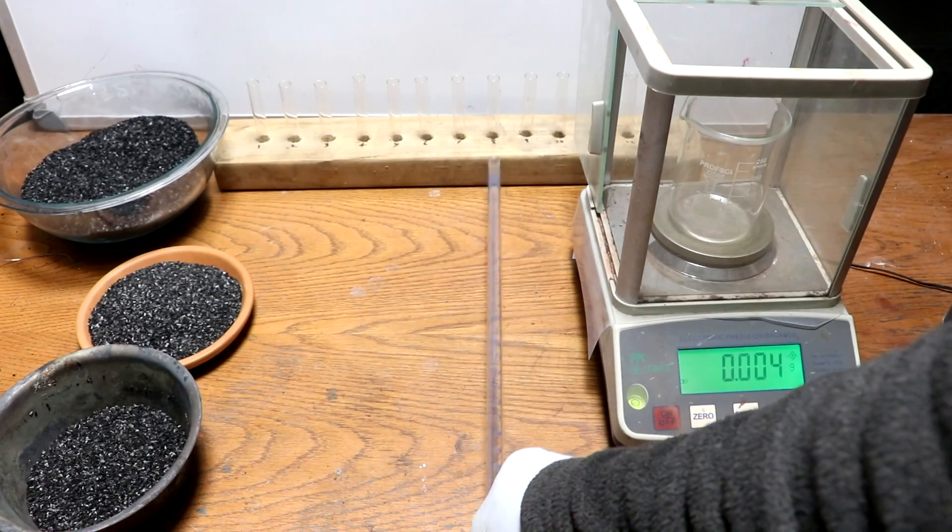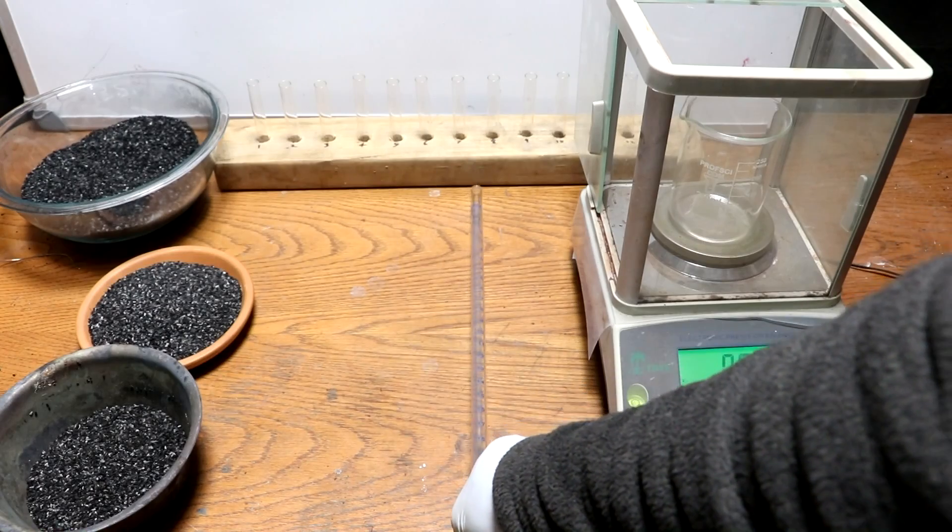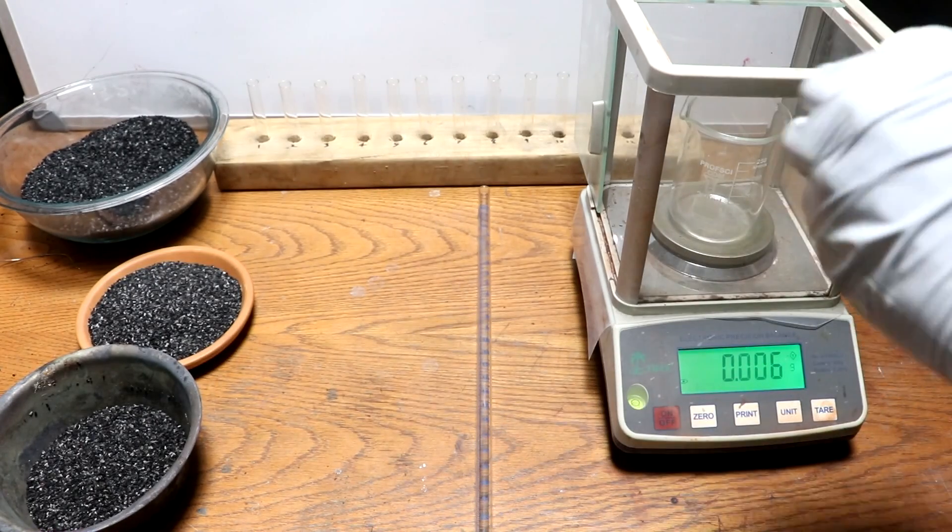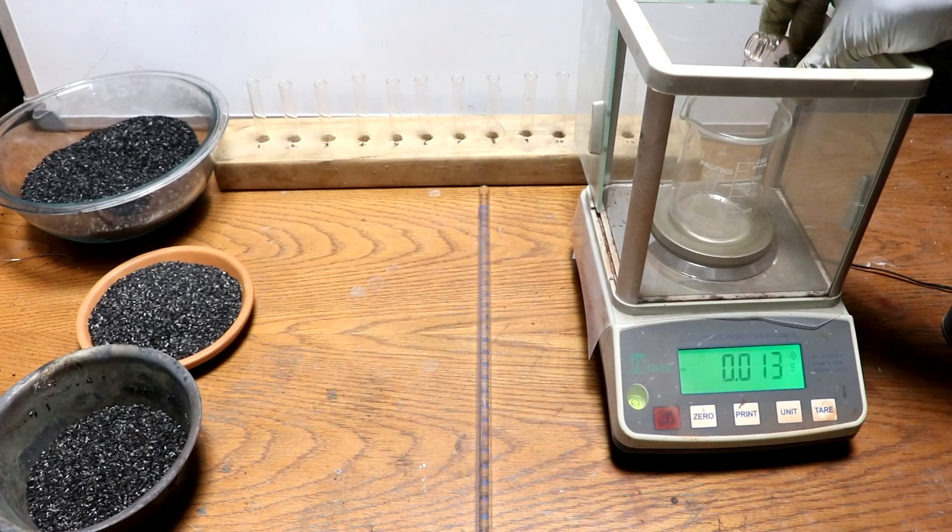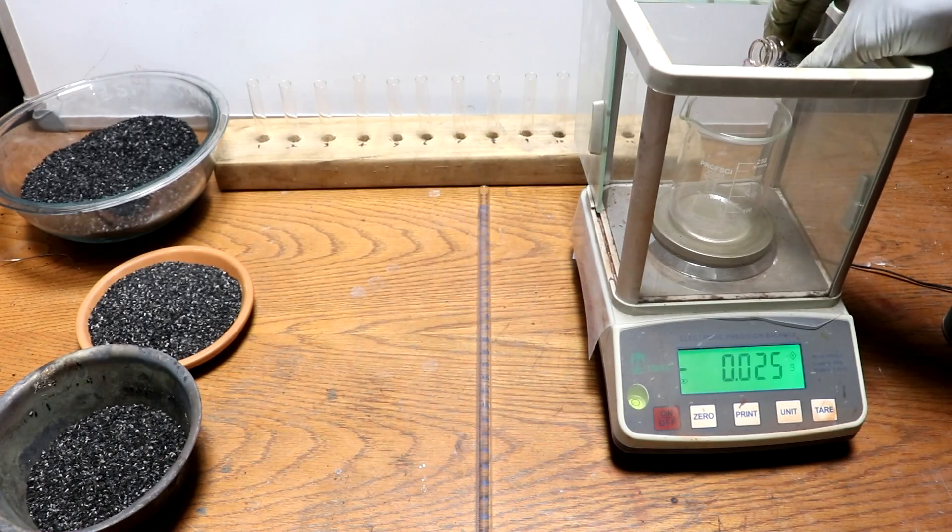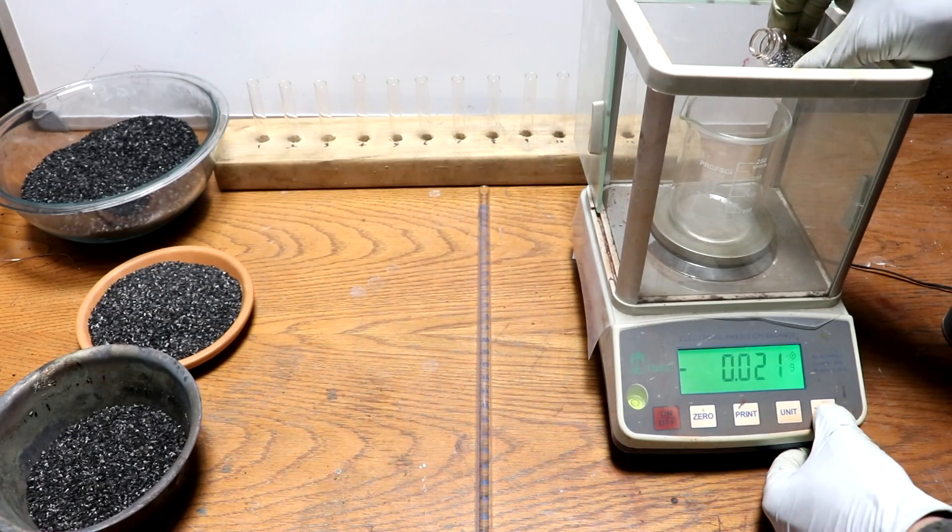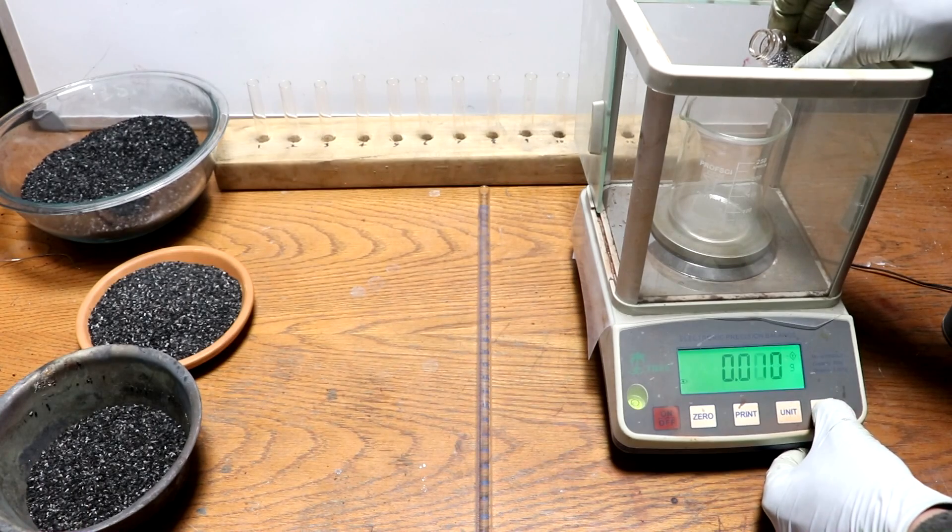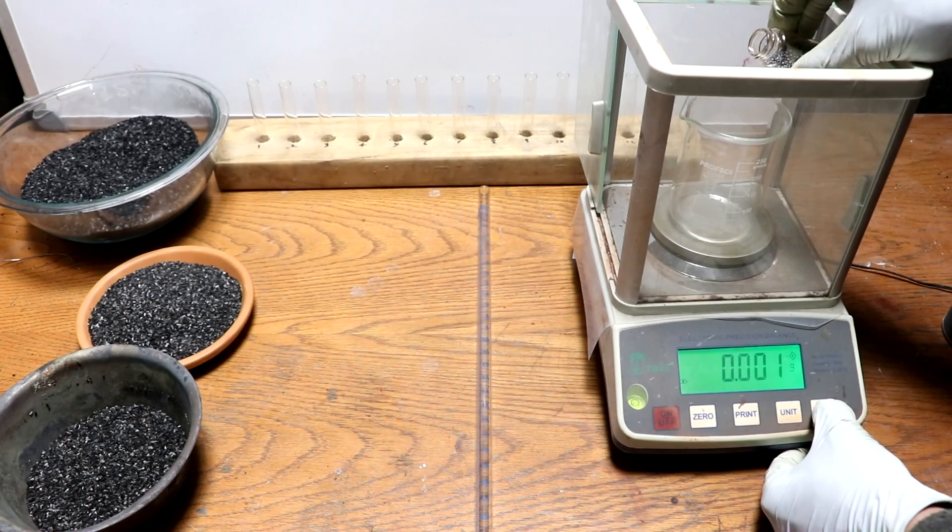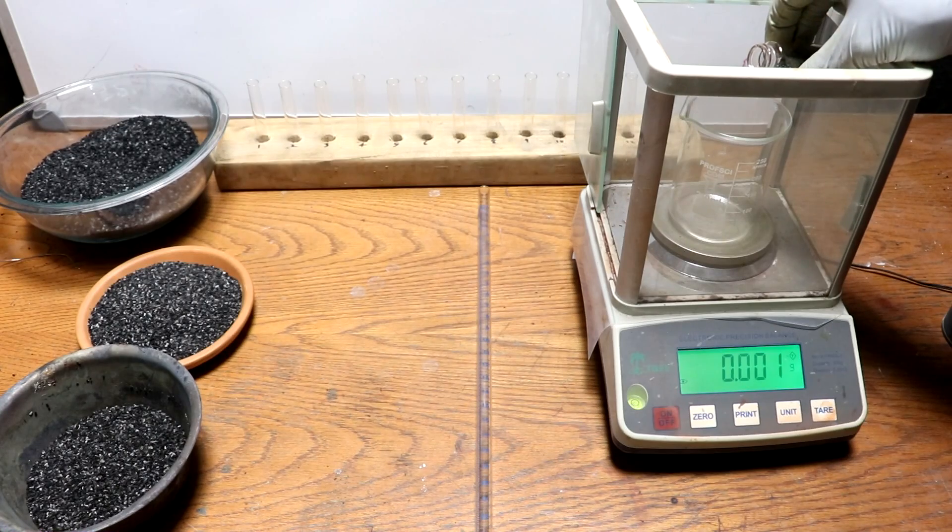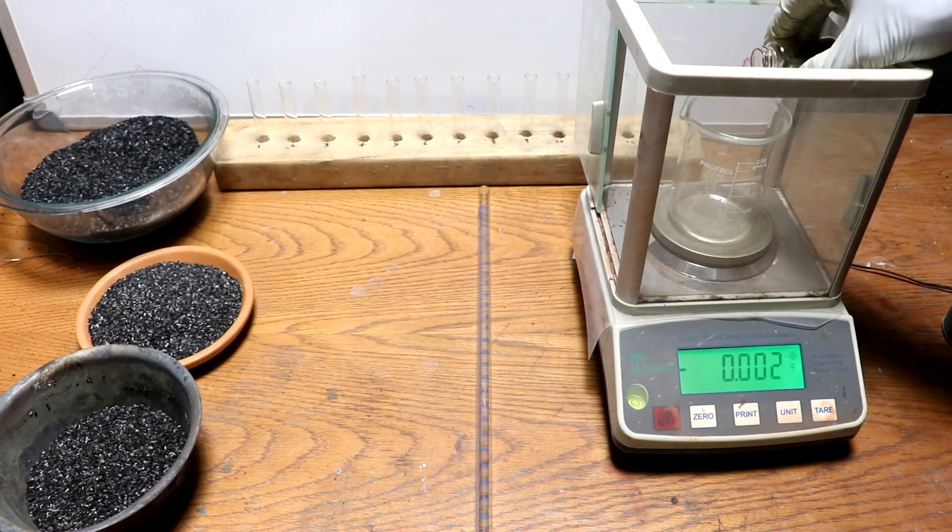So I have a burette here and a bunch of test tubes. Let me weigh out some iodine and make a standard solution. I'm going to try for about a gram of iodine and I will dilute that with 250 milliliters of alcohol.